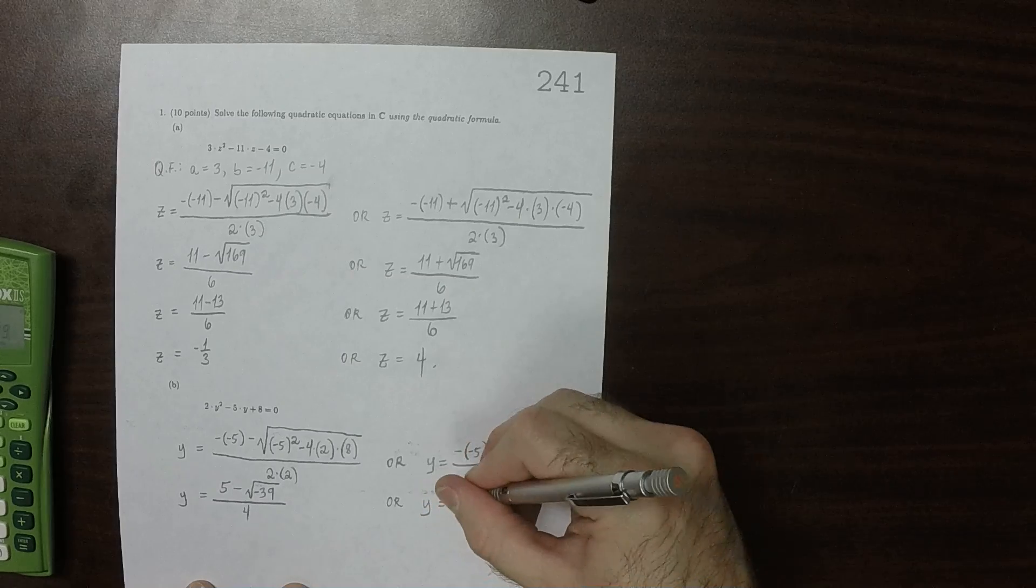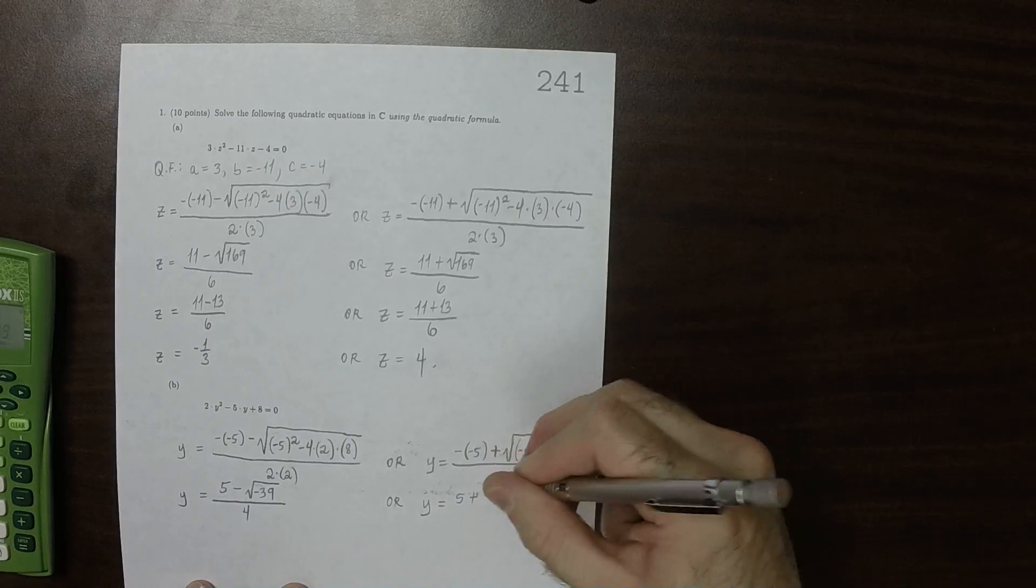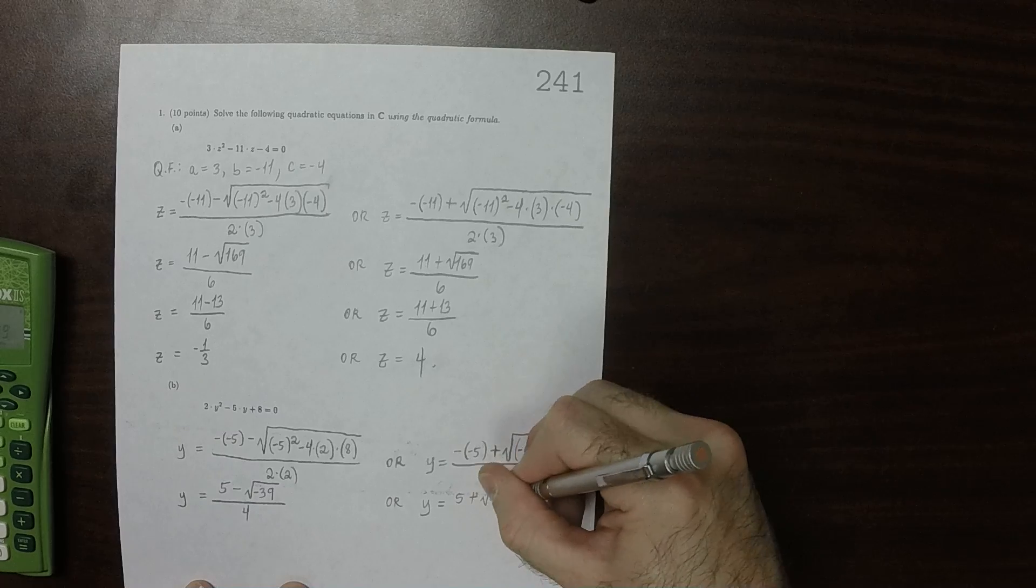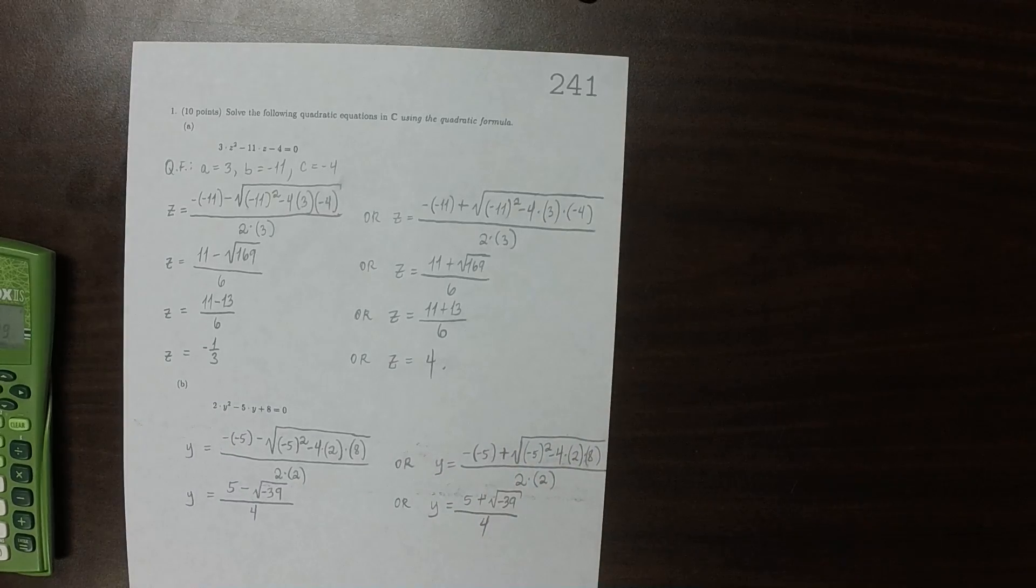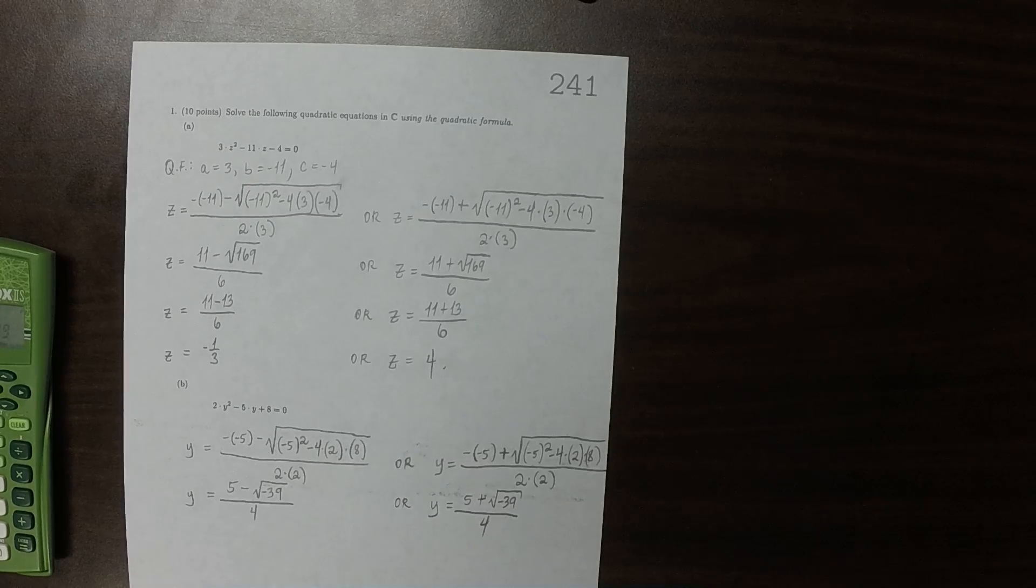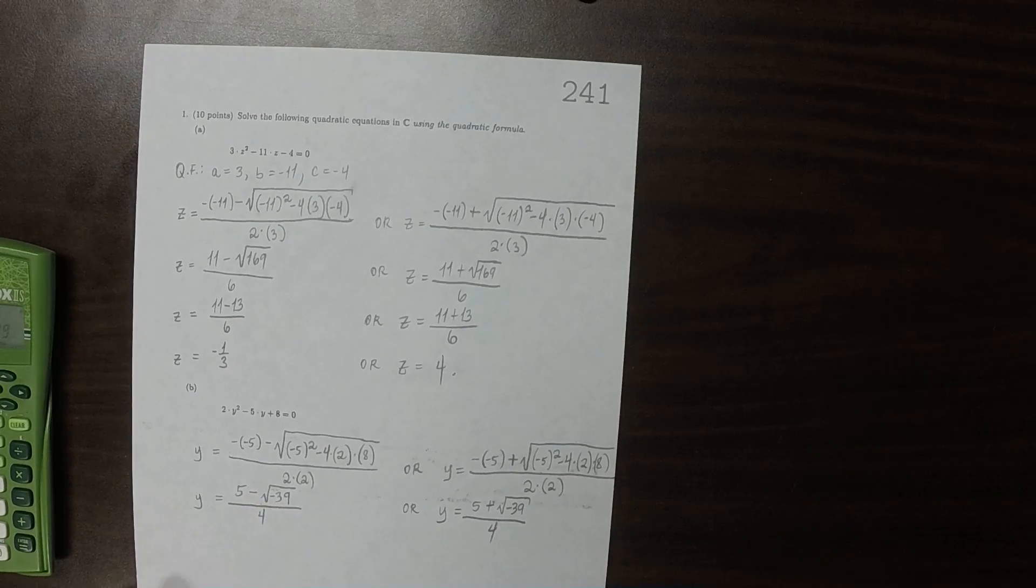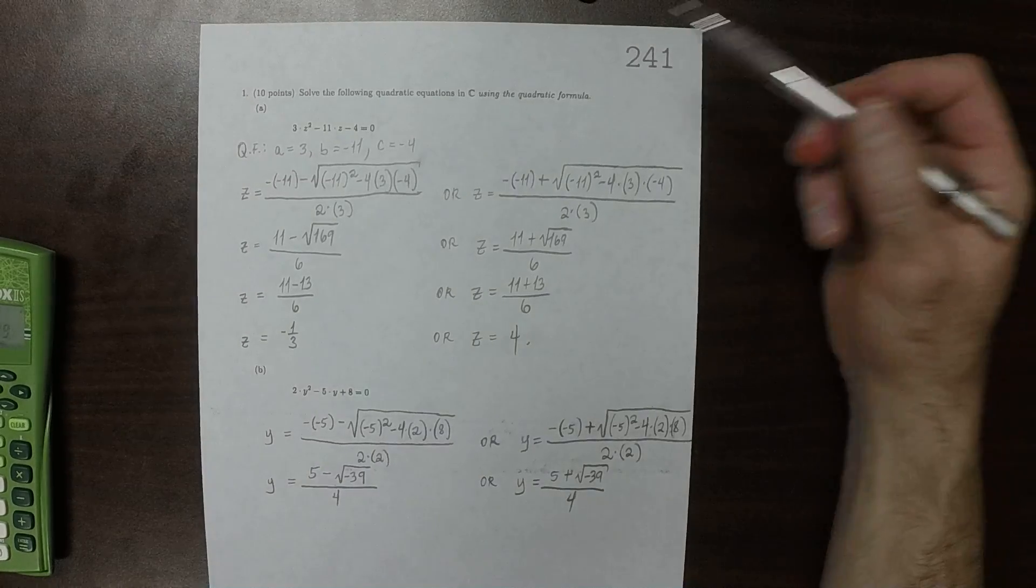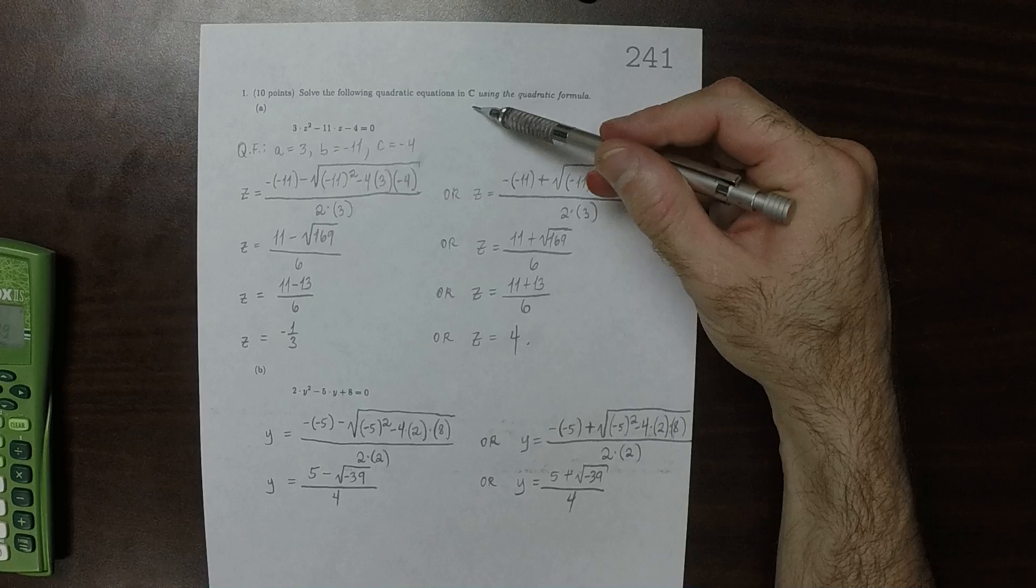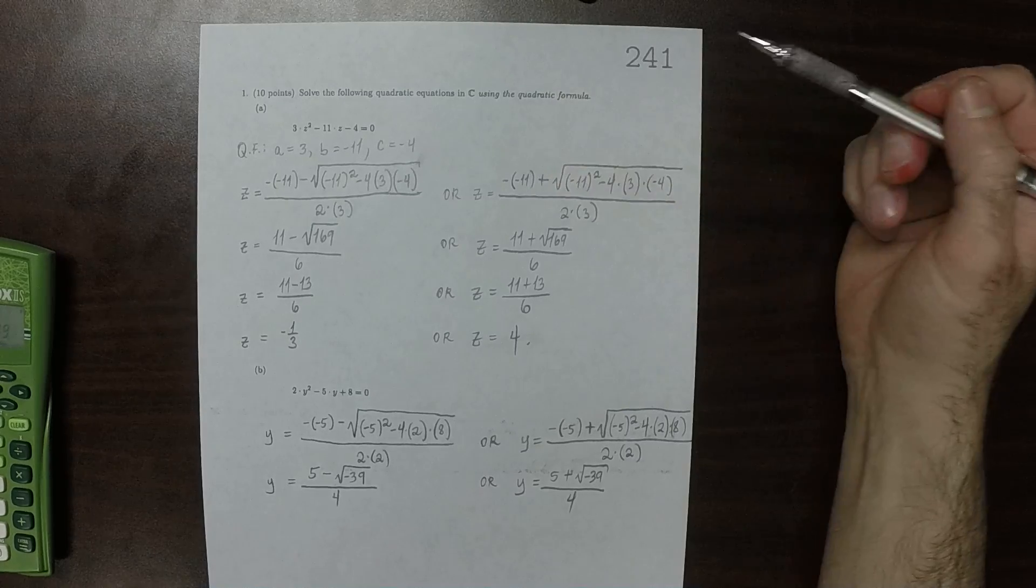Or y is 5 plus the square root of negative 39 over 4. So for this one, when you see a negative in the radical, you should pause and ask, is that okay? And the answer is yes, because it says that we're operating in the complex numbers, so that's okay.